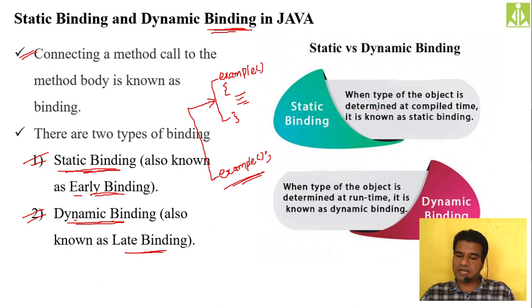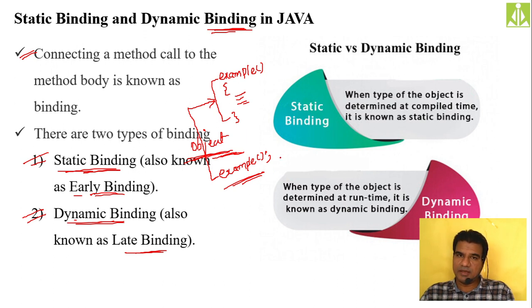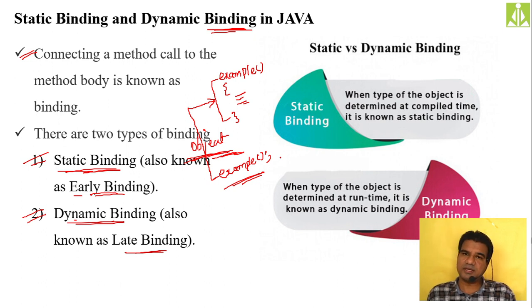In Java, to establish the connection we need an object. If the object is resolved at compile time — if the object is determined at the time of compilation — we call it static binding. If the object is determined at the time of run, we call it late binding. Once the object is known, only then can you call the method. If it is known at compile time, you call the method at compile time — static binding. If known at runtime, it's dynamic binding.